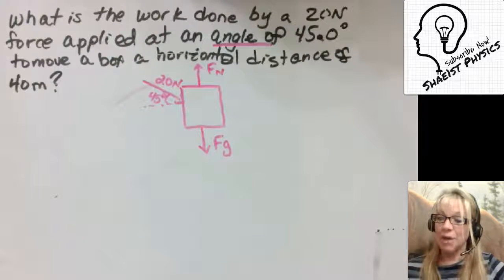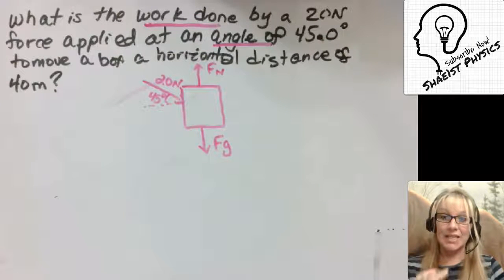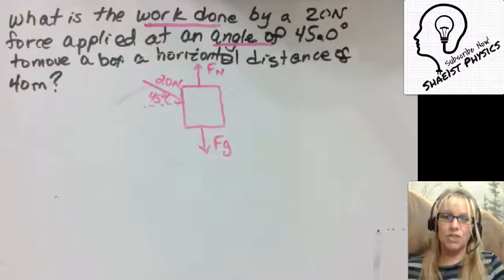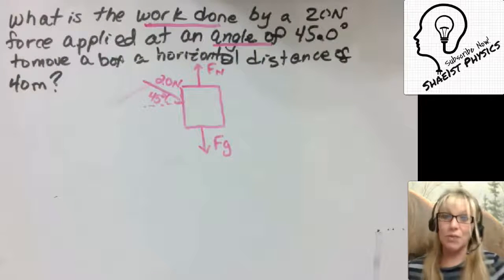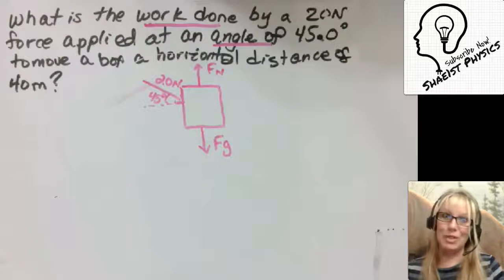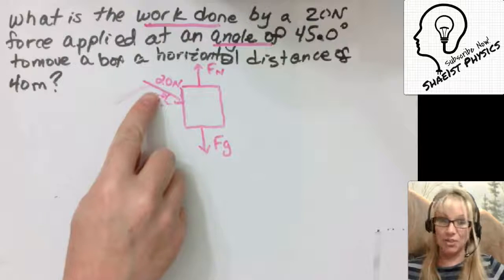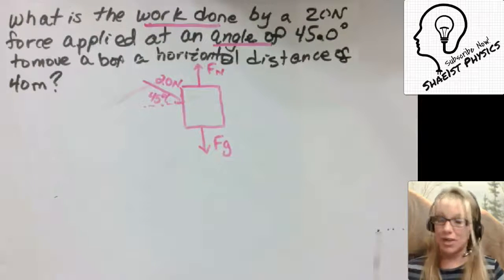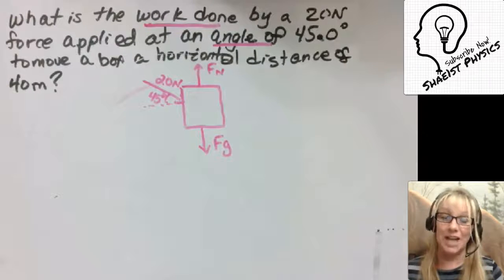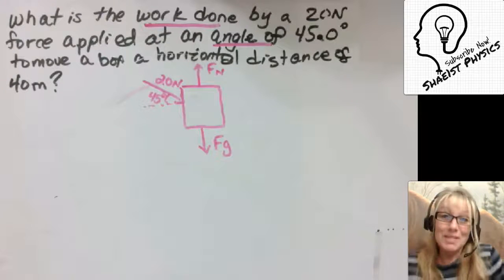Now the question is asking, what is the work done? Well another assumption we're going to have to make is we're going to have to specify, we're going to have to think, okay do they mean the net work? Do they mean the work done by the normal force? Do they mean the work done by the gravitational force? Well we're going to find out that it could really only mean one thing. It could really only possibly be either the applied force that they're talking about or the net force. Because the normal force and the gravitational force are at 90 degree angles, those are automatically going to cancel out because they're going to be zero. Bye bye, see you later.